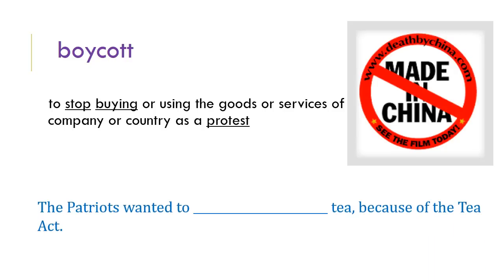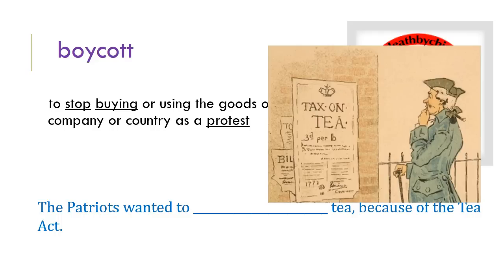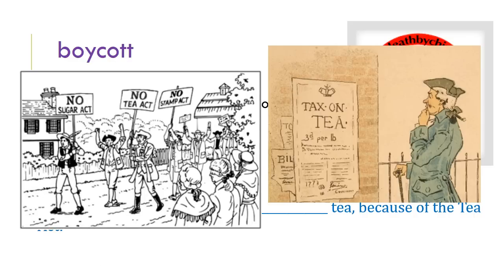In context to what we're learning about in the Revolutionary War, the Patriots actually boycotted something. They boycotted tea because of the Tea Act. The British government had put a monopoly on tea — people in the colonies were only allowed to buy British products, including their tea. This made colonists mad because they were required to pay a tax every time they bought tea. So they boycotted it by not buying or using tea in the colonies.